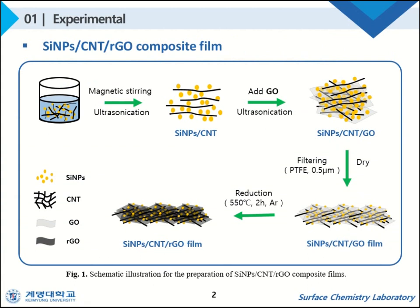Figure 1 shows the preparation of the Silicon Nanoparticles, Carbon Nanotube, Reduced Graphene Oxide Composite Films. Silicon Nanoparticles and Carbon Nanotube powder were added to ethanol and stirred, followed by sonication. Subsequently, the Graphene Oxide acid solution was added to the Silicon Nanoparticles Carbon Nanotube solution and sonicated.